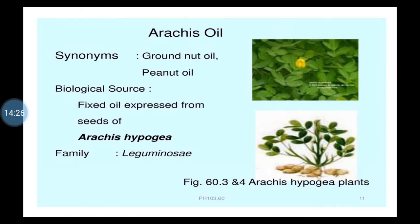Next is Arachis oil — Arachis oil means groundnut oil or peanut oil, also called shengdana oil. Our food is cooked in Arachis oil. It is a fixed oil. Biological source: Arachis oil is a fixed oil expressed from the seeds of Arachis hypogaea by compression. The family is Leguminosae. It is soluble in alcohol and other organic solvents.